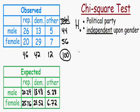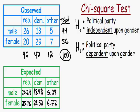Now let's state our alternative hypothesis, written as H₁ or Hₐ. The alternative hypothesis is always the opposite of the null. Since the null states the political party is independent of gender, the alternative hypothesis must be that the political party is dependent upon gender — meaning your gender does influence which political party you support. We are now ready to move on to step two.